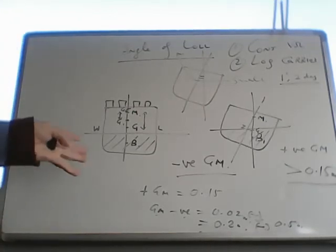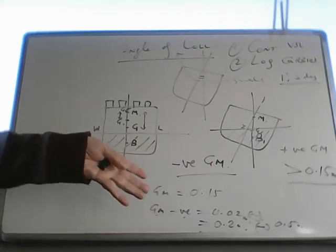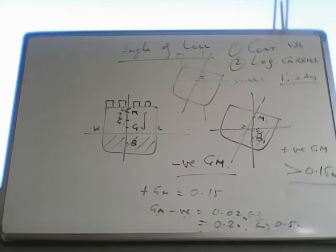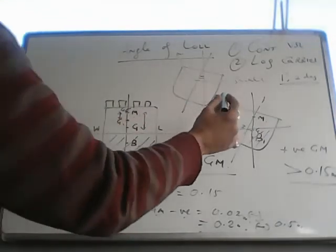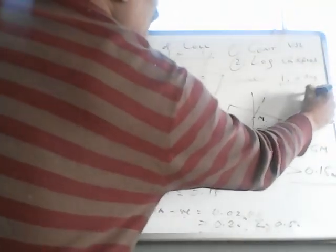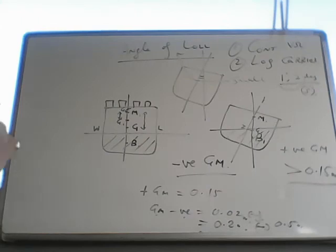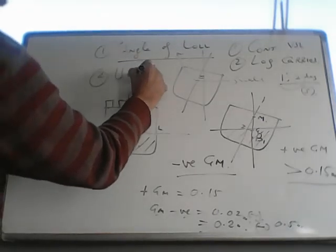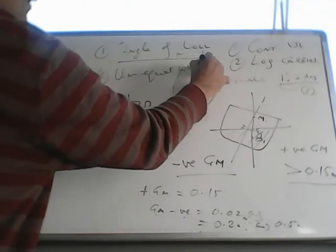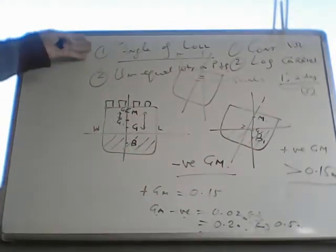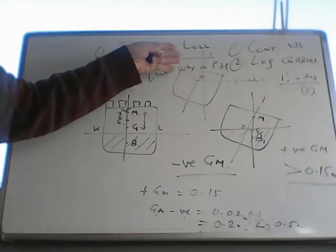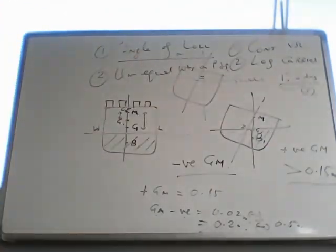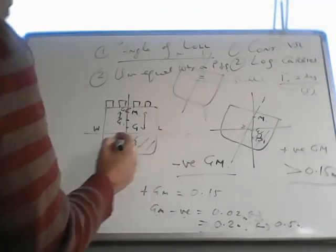Now if you are sailing on the ship in upright condition, and one day you find you are listed 1 or 2 degrees to starboard side, this list could be due to 2 reasons. One is angle of loll, second is unequal weights - unequal weights on port and starboard. So how to find out what is the reason of this list, 1 to 2 degrees starboard list?